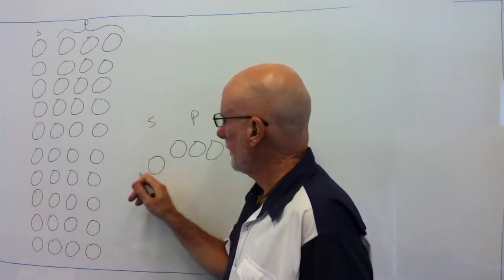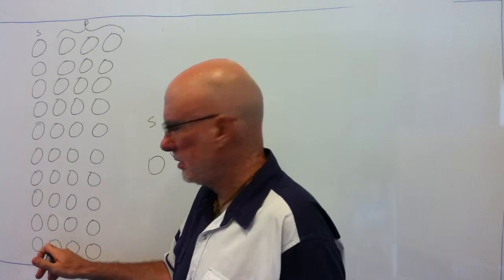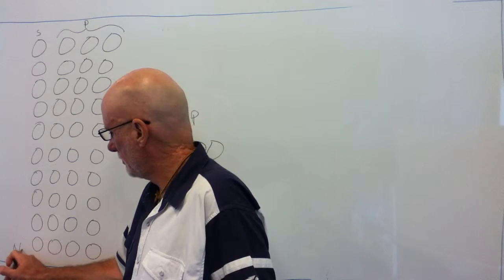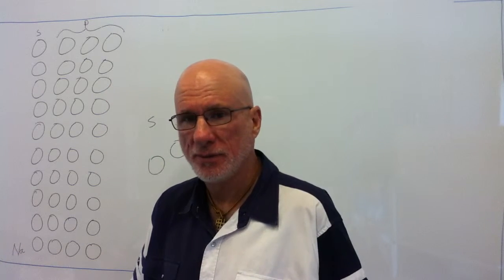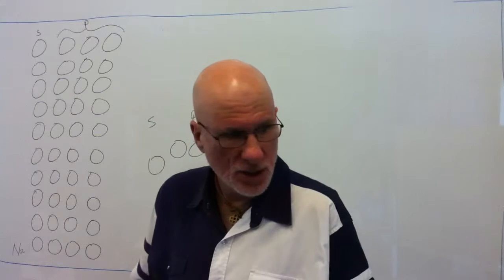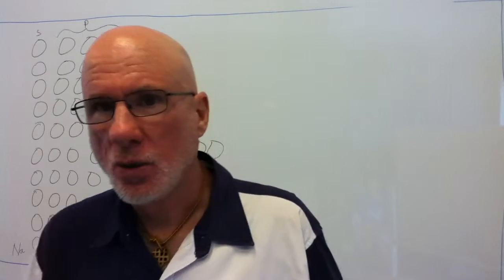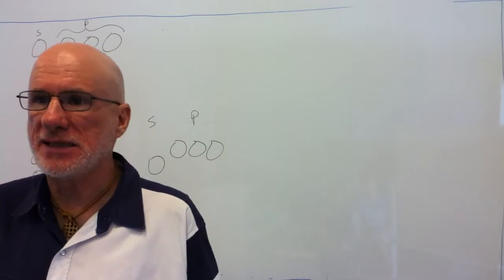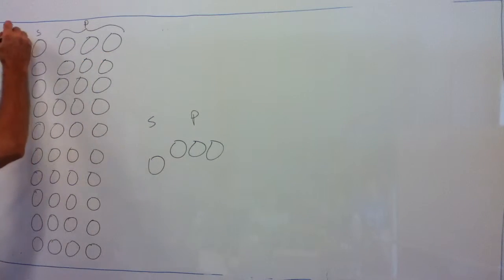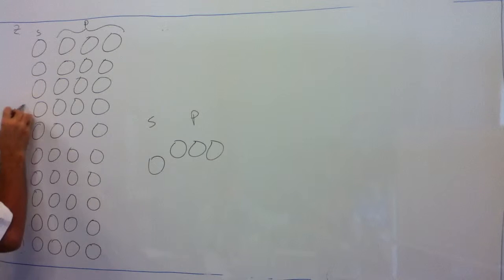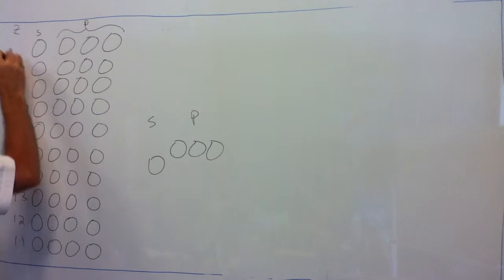Now, we see that this is going to be sodium here. Let's say we're doing three. So, that's sodium. What we're going to do is we're going to call this 11. We're going to make this the Z. It's going to be 11, 12, 13, 14, 15, 16, 17, 18, 19, 20.